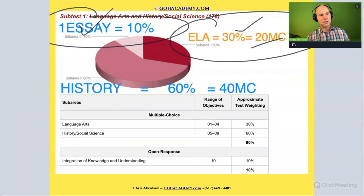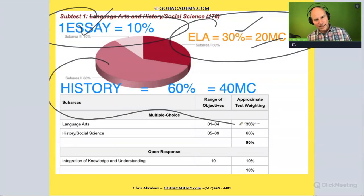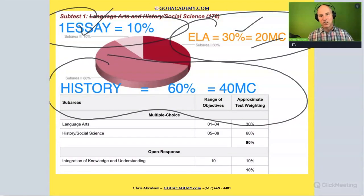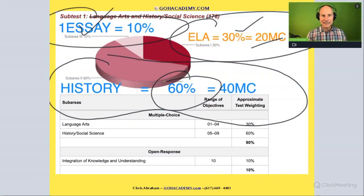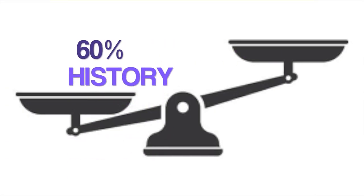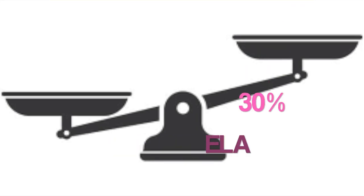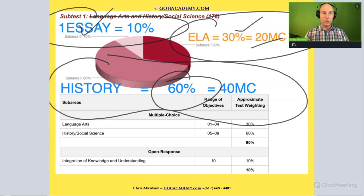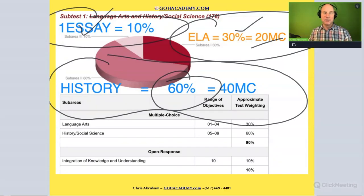Now let's look at history. The old test had only 55 questions and this new test has 60 questions, so first there are more questions, and second, history is now 60 percent of the test. It's not equal — it's not 50/50 ELA and history, which would have been a much more balanced exam where history equals language arts.